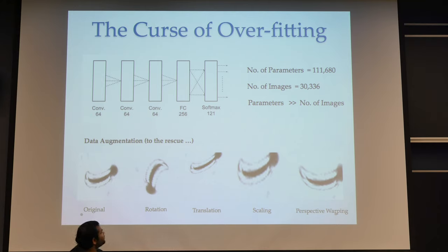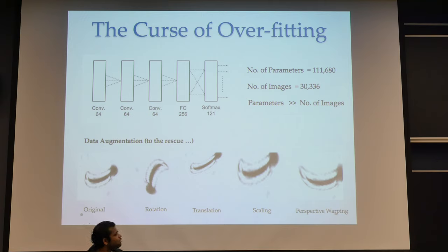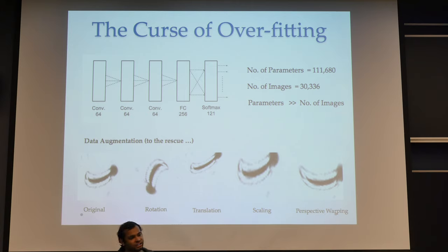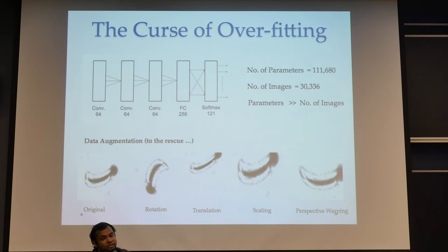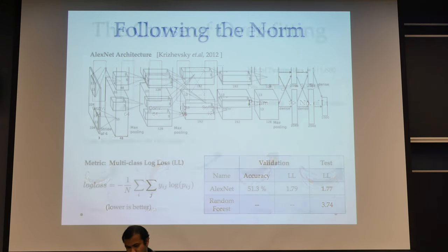We tried various ways to augment the data: rotation, translation, scaling, and perspective warping. We also do online data augmentation, in which in every iteration of training the neural network, each image is randomly rotated, translated, scaled, and warped before being fed into the neural network.